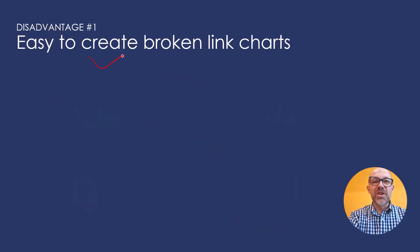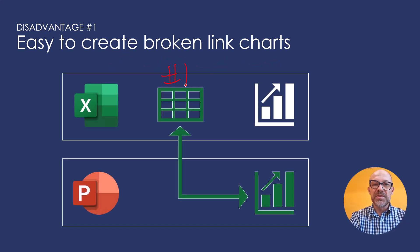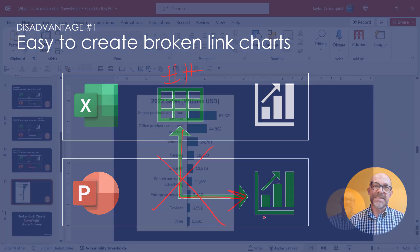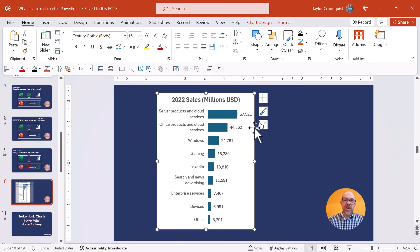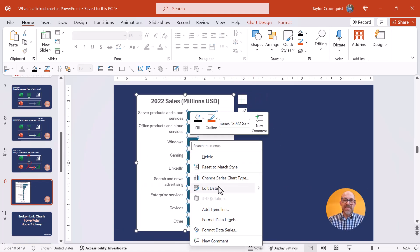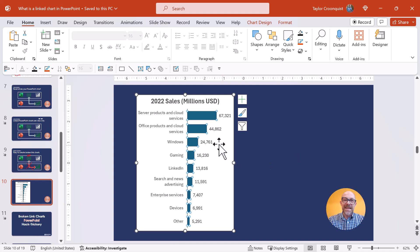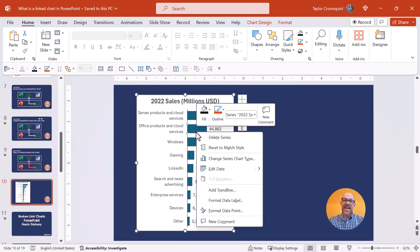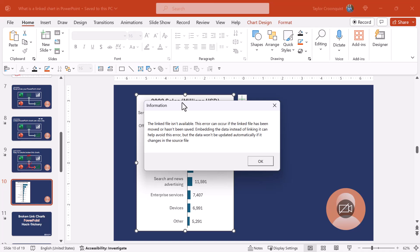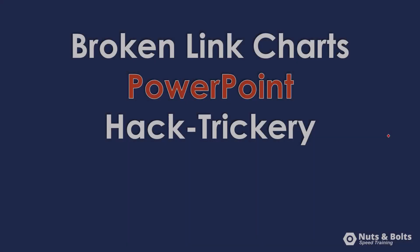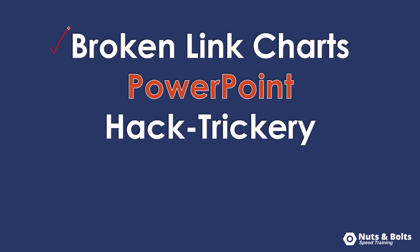One of the main disadvantages of linked charts is that it's easy to create broken link charts in PowerPoint. A broken link chart occurs when you've hooked up a linked chart in PowerPoint and then break that link. For example, if a client sends you a chart to update and you right-click and select 'Edit Data,' you immediately get 'linked file isn't available.' Someone probably accidentally linked their charts, didn't realize it, and sent the PowerPoint without the Excel spreadsheet — creating a broken link chart.